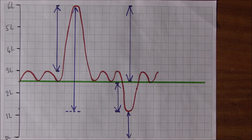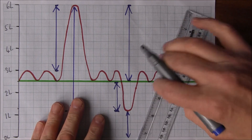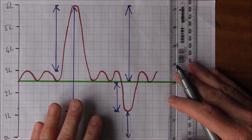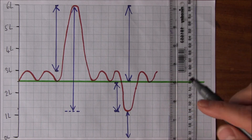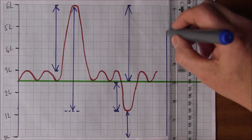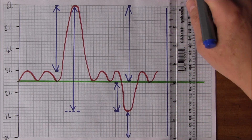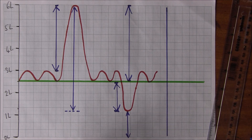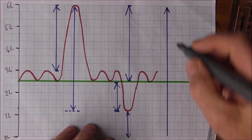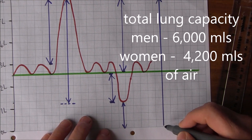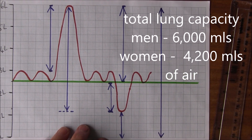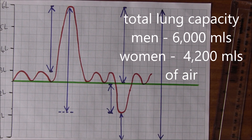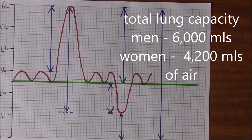This total capacity — drawing the line from the lowest to the highest — is the Total Lung Capacity. That whole six-liter figure in men, or about 4,200 mils in women, is the Total Lung Capacity.